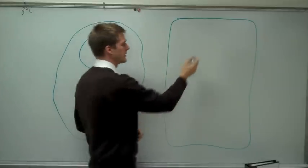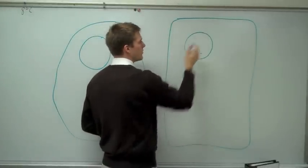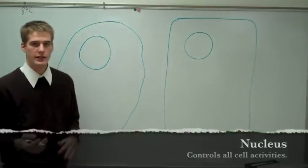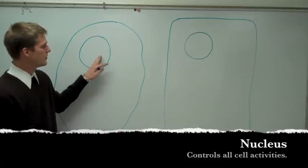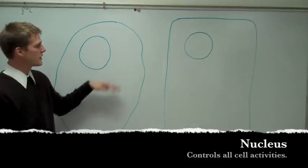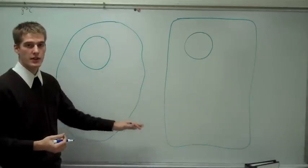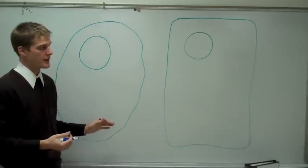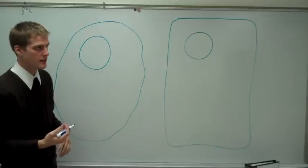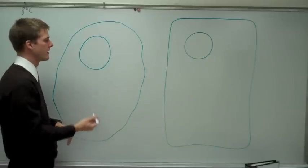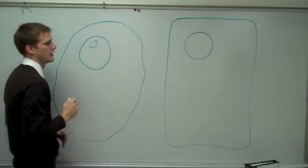The next biggest thing is the nucleus. The nucleus controls all cell activities, and both plants and animals have a nucleus. The nucleus controls what goes on inside the cell, and the cell membrane controls what goes in and out of the cell. There have to be more components to the cell in order for it to survive.